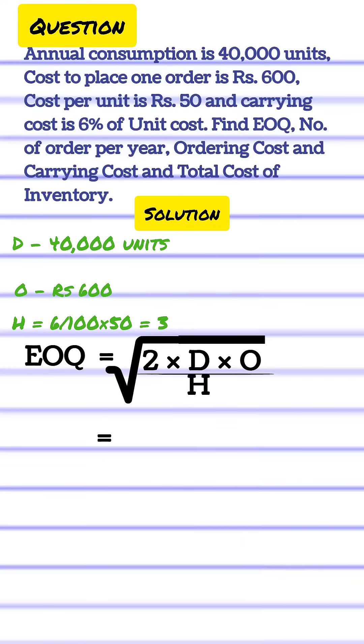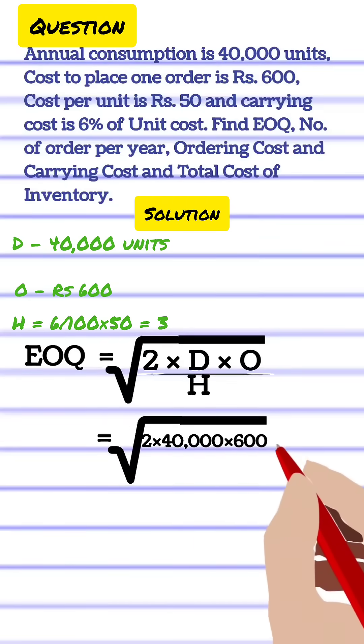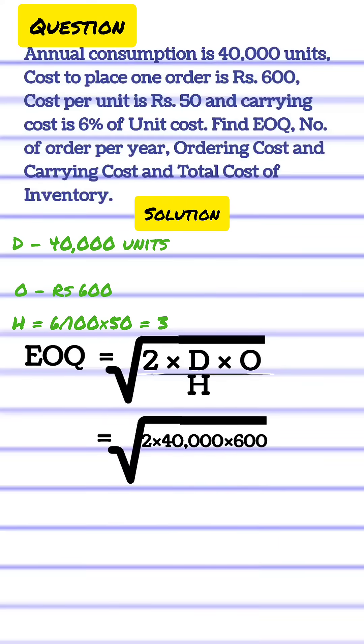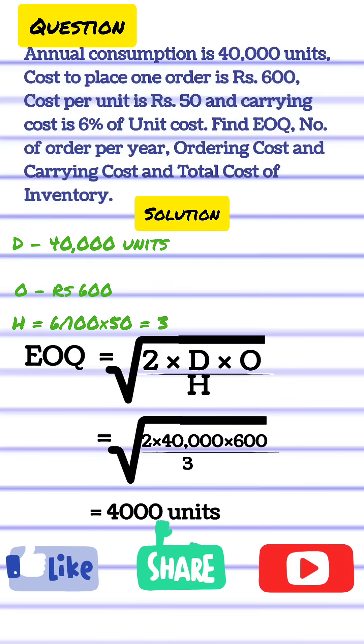Square root of 2 into 40,000 into 600 divided by 3 which is equal to 4,000 units.